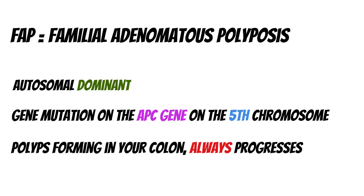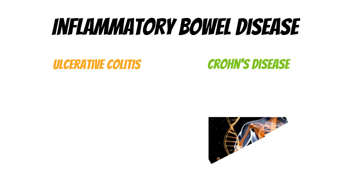FAP is the most well known, but there are other hereditary conditions too. Lynch syndrome — also called Hereditary Non-Polyposis Colorectal Cancer — is another autosomal dominant condition with an 80% chance of progressing to CRC, and it always involves the proximal colon. There are also other conditions such as Gardner syndrome and Turcot syndrome, which we'll cover in future videos.